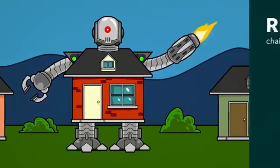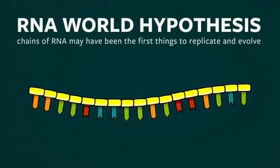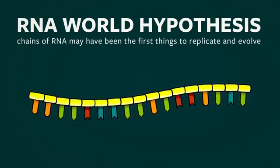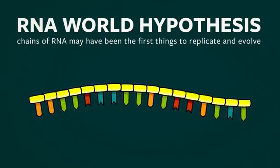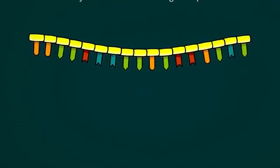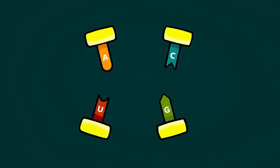To understand how RNA chains can interact with their environments, replicate, and evolve, we first need to understand the simple process of base pairing. Chains of RNA are made of nucleotides, small molecules that come in four different types labeled A, C, U, and G.